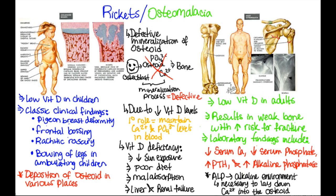Alkaline phosphatase creates an alkaline environment, which is necessary to lay down calcium into the osteoid. If you recall, when we were talking about osteopetrosis, an acidic environment is necessary to remove calcium — well, the opposite is also true: an alkaline environment is necessary to add calcium. Osteoblasts have alkaline phosphatase because it creates the alkaline environment that allows them to calcify the unmineralized osteoid.